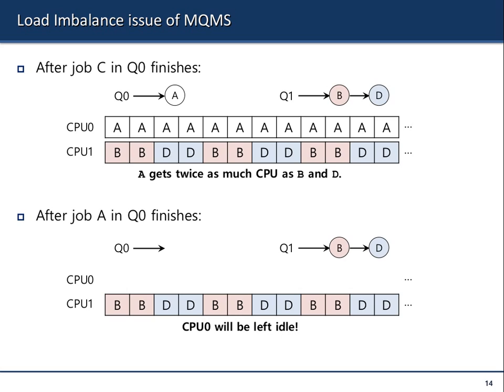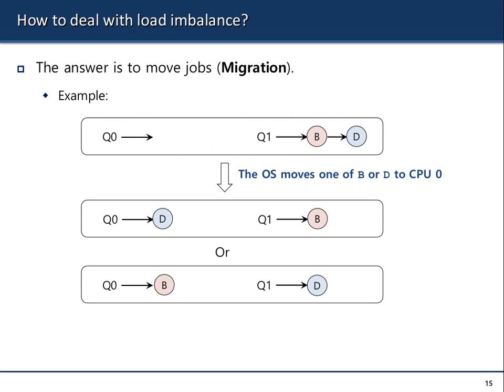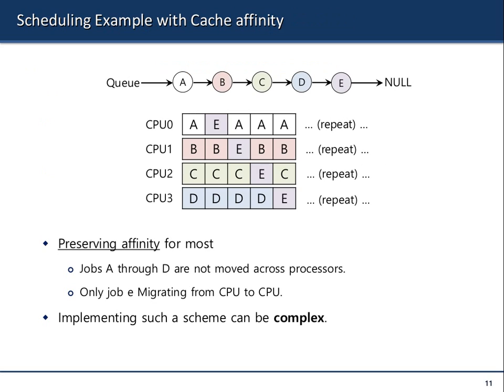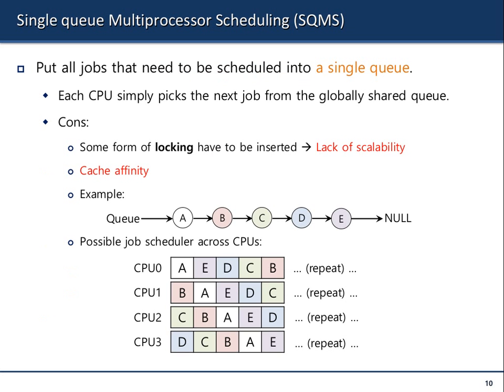How does the operating system decide where to execute, or what process to execute next for the CPU? If you only have one CPU, we have different algorithms for that. And if you have multiple CPUs, you also have algorithms — it's more complicated for multiprocessor scheduling. I think we finished last time with the issues with the single-queue multiprocessor scheduling.